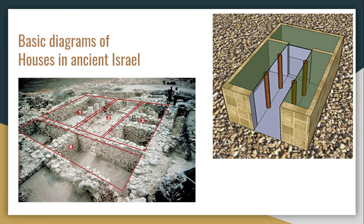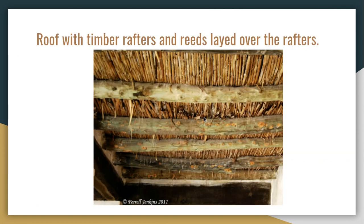As we can see here, 1, 2, 3, and 4 would have been houses and their foundations. The other photo shows a foundation of a house with a four-pillar courtyard and a back room. Here is also a roof with timber rafters with reeds laid over the rafters.